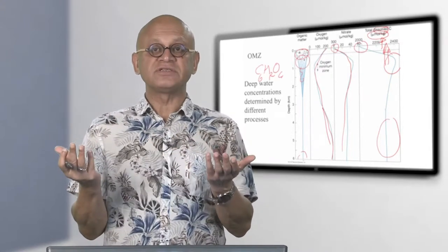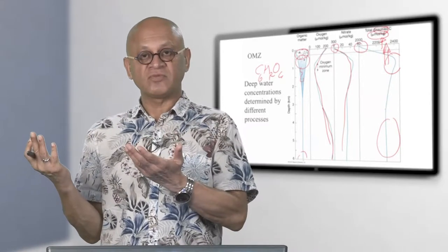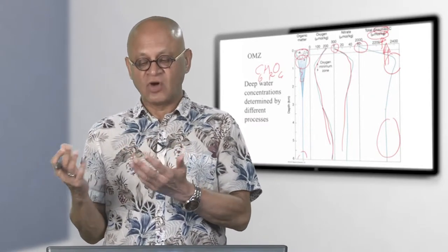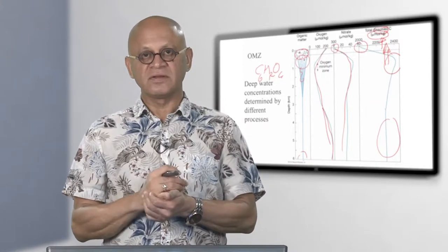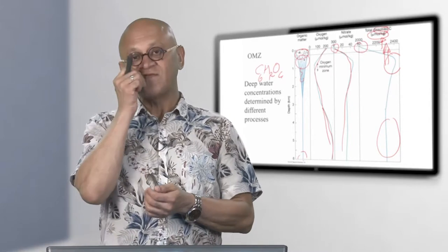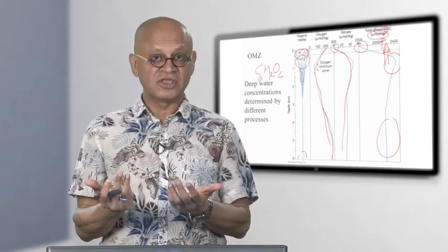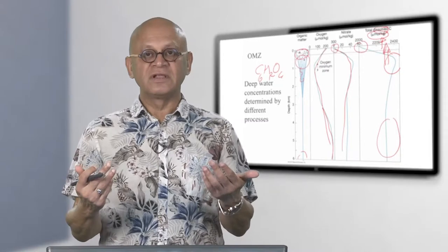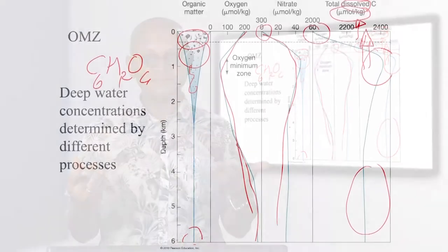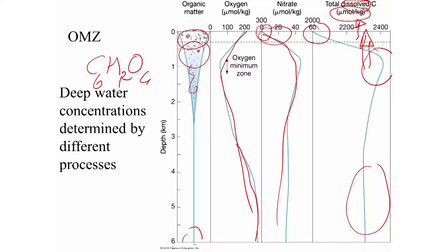These are trace gases because nitrogen is 79% and oxygen about 20% of the atmosphere. In the ocean, on the other hand, there is plenty of CO2 and very little nitrogen — so nitrate, a form of nitrogen, is often a limiting nutrient. Like lawns need fertilizers, the ocean surface needs nitrate, phosphorus, silica, and iron to drive photosynthesis. Nonetheless, there is plenty of CO2 in the ocean, and its profile looks like the inverse of the oxygen profile.